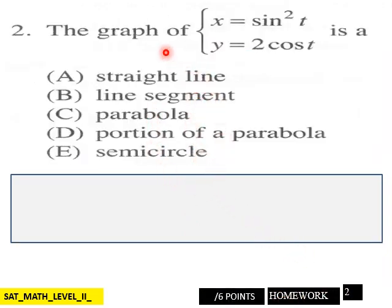Page 2, 6 points here. The graph of x equals sine squared t, y equals 2 cosine t is a, which one of these objects? 6 points here, page 2.